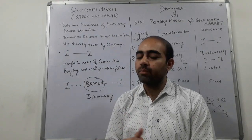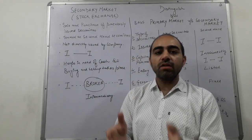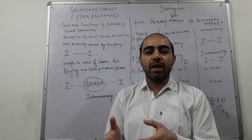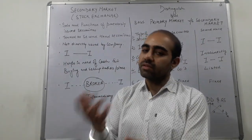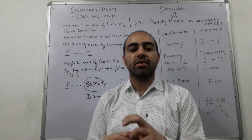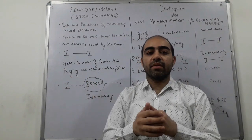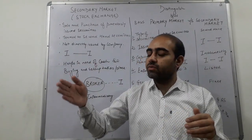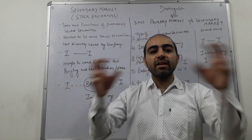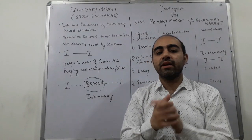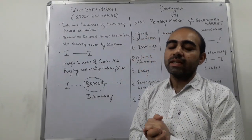This market is called the second-hand securities market, because the shares are already existing in the market. This market plays between investor and investor — one existing investor is selling, another investor is purchasing. Buying and selling happens between two investors. That is why it is known as the secondary market.